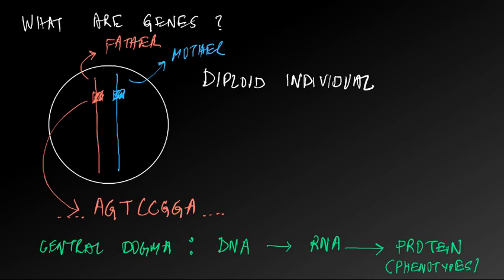Phenotypes are observable features of organisms, such as the color of peas — green or yellow — in Mendel's experiments, or their texture — wrinkled or smooth. Or the coat color of dogs, from gray to black to white to brown, or human height, for example. Anything that's observable about an organism is a phenotype.